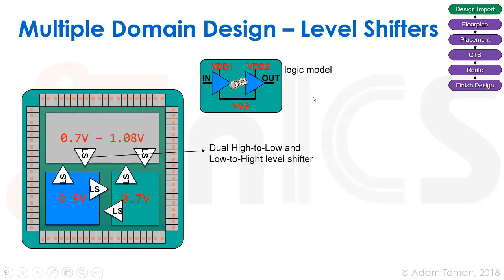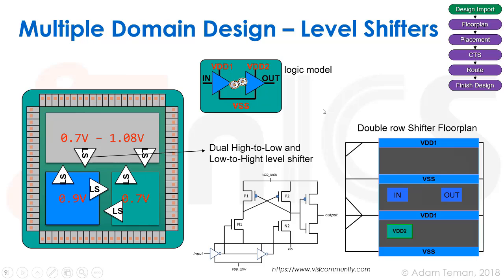When driving voltage down, such as from 0.9 to 0.7 volts, a regular CMOS inverter generally works fine. The problem is when we need to drive voltage up, such as 0.7 to 0.9 volts, or handle both directions. The basic circuit for this is called a DCVSL-type logic gate, which ensures a pull-up to the high VDD during a voltage rise. These gates have one main voltage — VDD high, typically VDD 2 — while input inverters may work on the low VDD, requiring a second VDD supply.